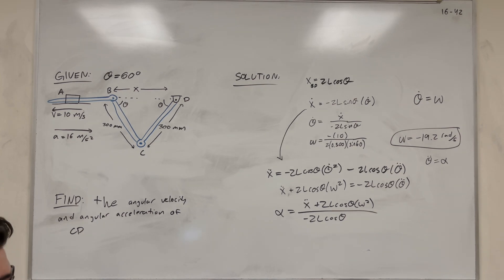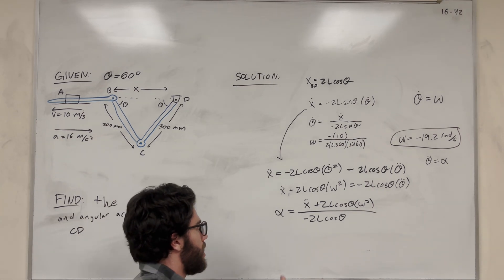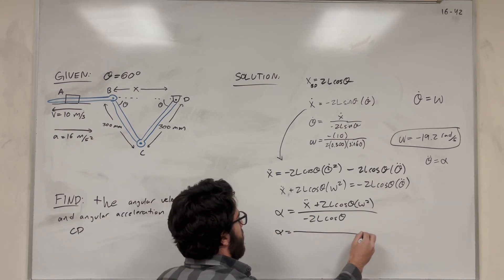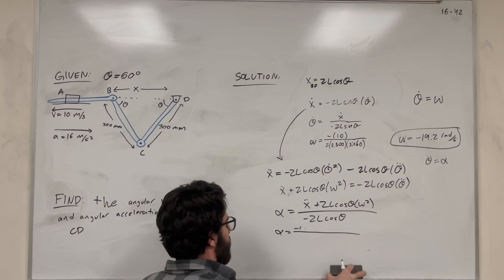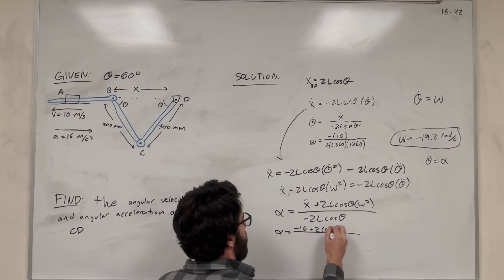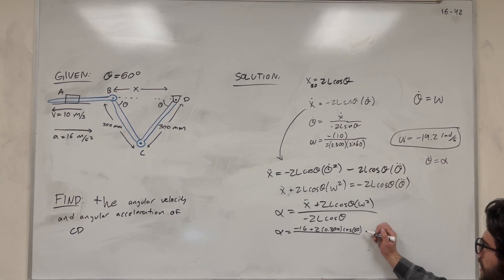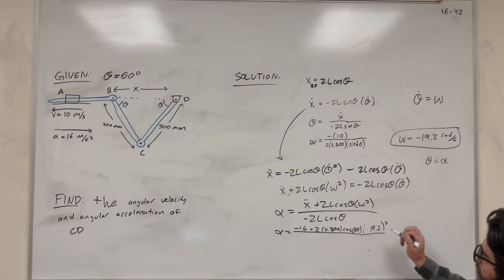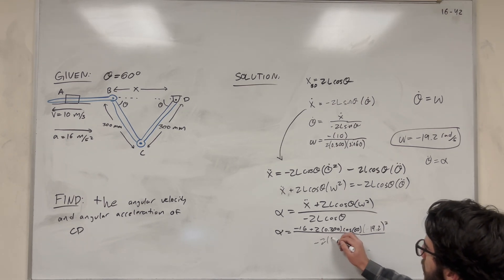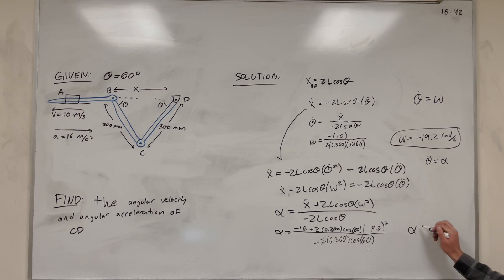So we're left with that equation. Let's plug in everything we know. ẍ is going to be negative 16 — we made the motion backwards so we need a negative sign. Plus 2 times length 0.3, cosine of 60 degrees, times angular velocity squared — that's negative 19.2 squared, so the negative doesn't matter. All over negative 2 times 0.3 times cosine of 60. Plugging this in, we get angular acceleration equal to negative 183 radians per second squared.